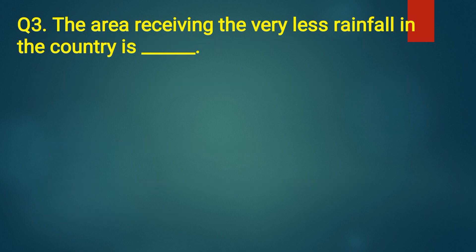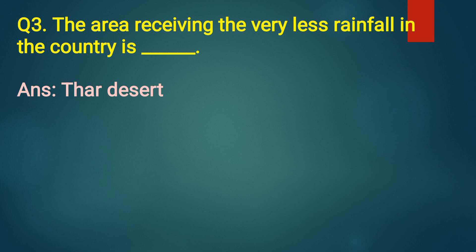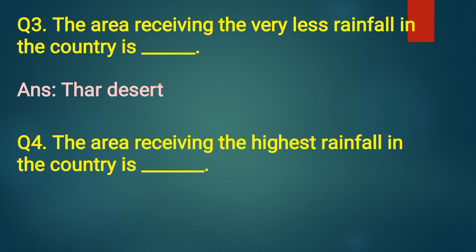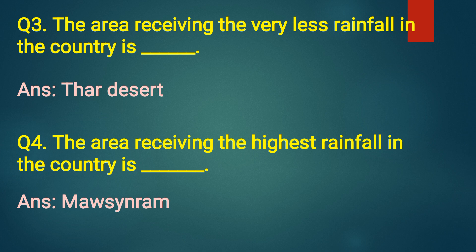Question number three: the area receiving very less rainfall in the country is? Answer: Thar Desert. The area receiving the very less rainfall in the country is Thar Desert. Question number four: the area receiving the highest rainfall in the country is? Answer: Mawsynram. The area receiving the highest rainfall in the country is Mawsynram.